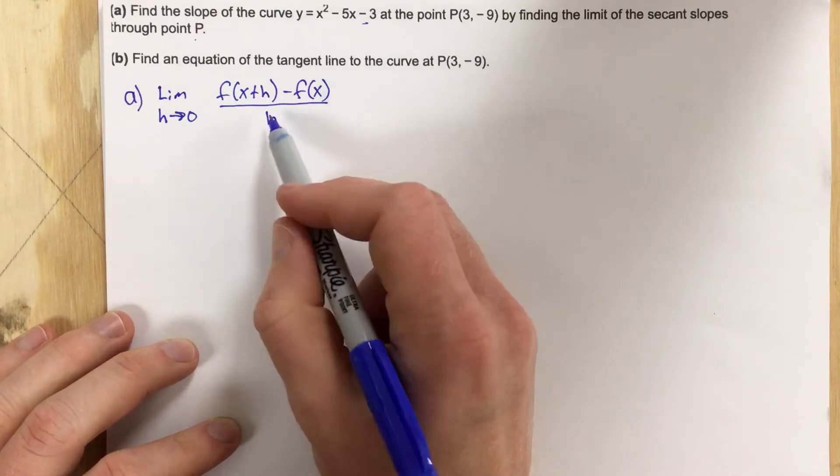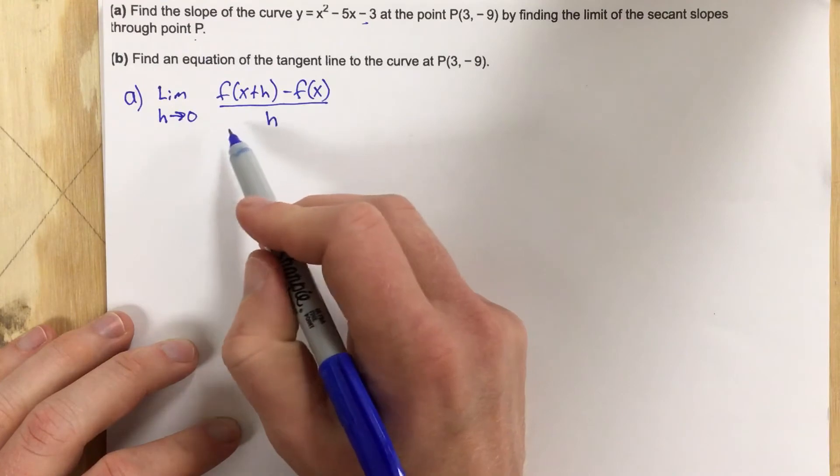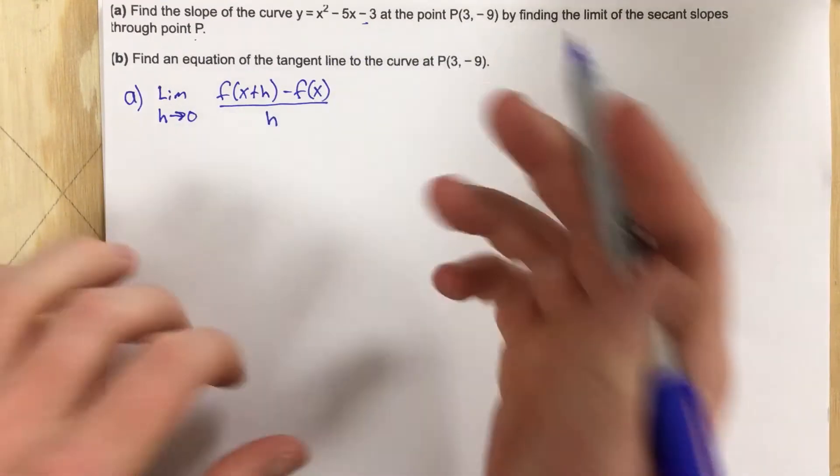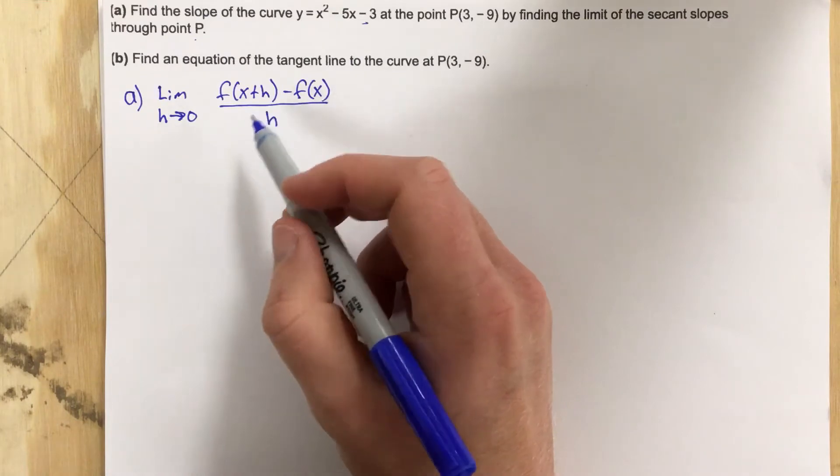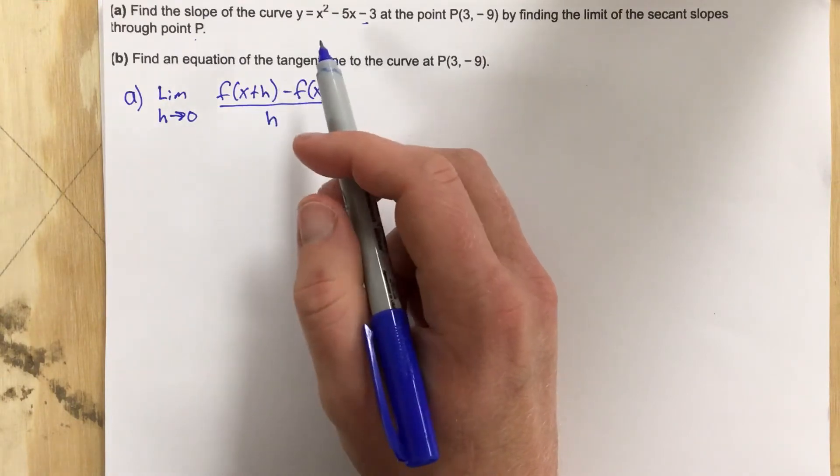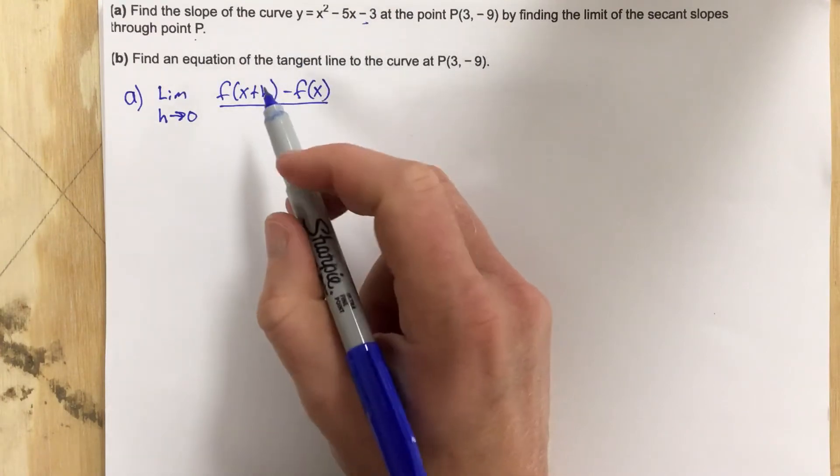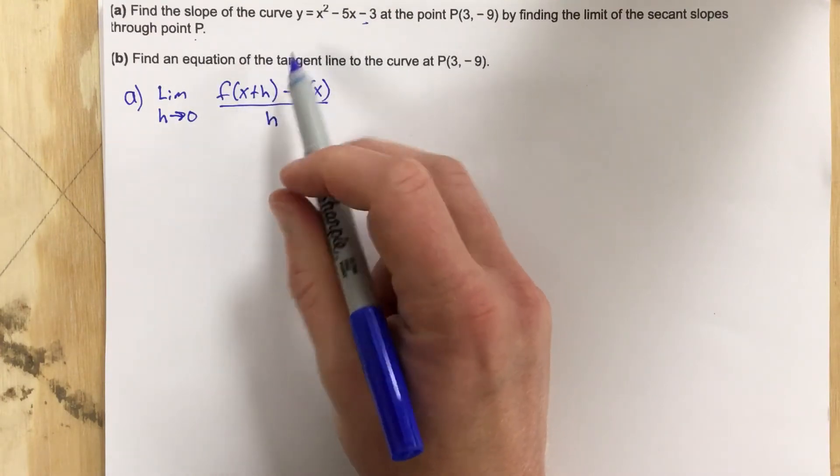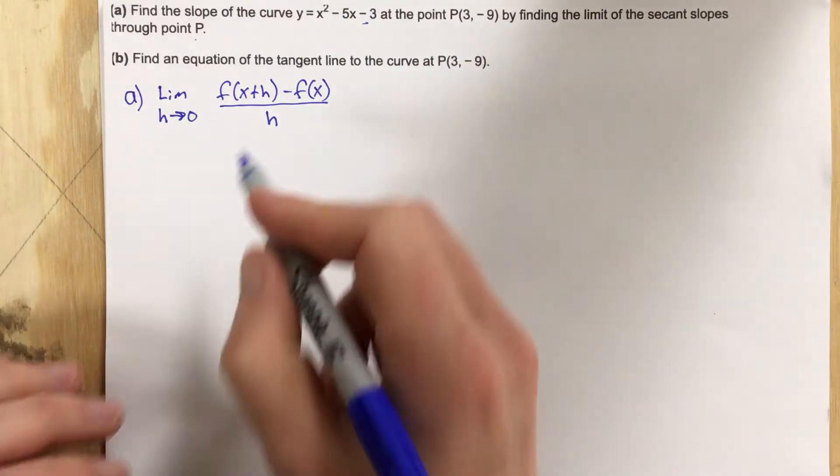Our goal is to cancel out the h. If you notice here, when we take the limit as h approaches 0, if we plug 0 into the denominator, we're going to divide by 0, so that's undefined. So what we need to do is cancel this h out. We're going to take x squared minus 5x minus 3 and have x plus h plugged into it, and then do some algebra to cancel this h out.